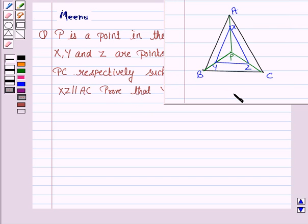So, this is the figure we need to refer. We are given a triangle ABC and P is the interior point and XY and Z are the points on the lines PA, PB and PC respectively such that XY is parallel to AB, XZ is parallel to AC and we have to prove that YZ is parallel to BC.